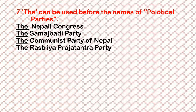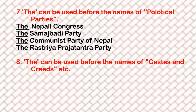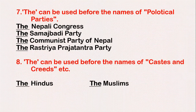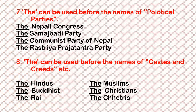Rule 8: 'The' can be used before the names of castes and creeds. For example: the Hindus, the Muslims, the Buddhists, the Christians, the Rai, the Seri, the Brahmins, the Magars, etc.